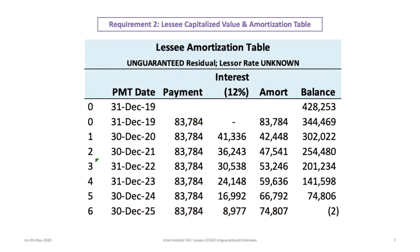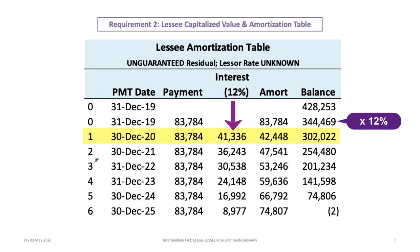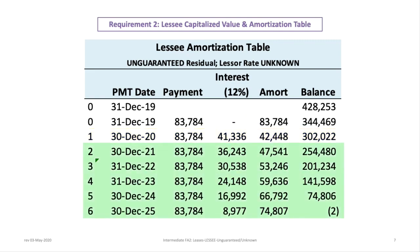Here is what the amortization table for this lease looks like, starting with a balance of $428,253. Because payments are due at the beginning of the period, the initial payment goes entirely against amortization of the discount. In subsequent periods, each $83,784 payment includes an interest expense component — for example, in the next period, interest is $41,336, calculated as the previous balance of $344,469 times 12%. The remaining $42,448 amortizes the discount. This repeats until the balance reaches zero, with a $2 rounding difference at the end.